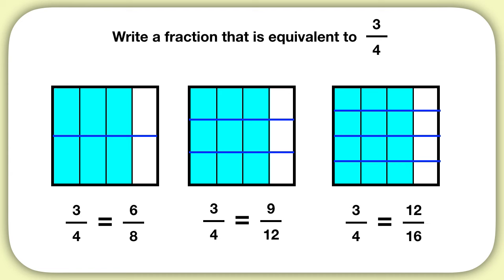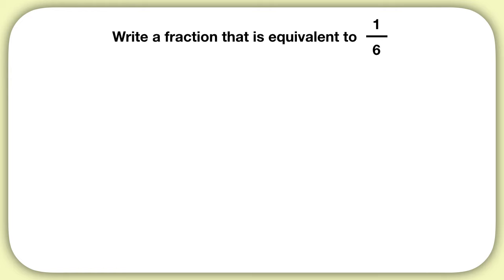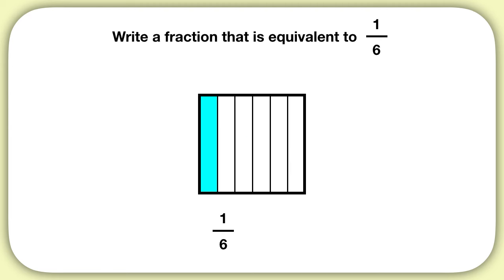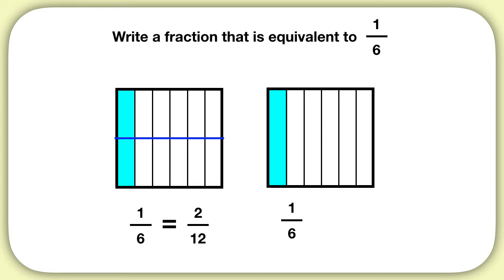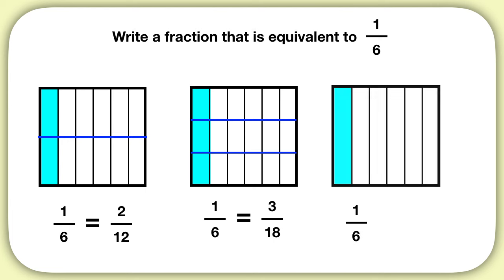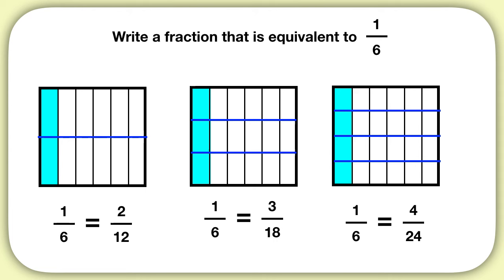Now are there other equivalent fractions besides these three that I could make? Yes — I could make more equivalent fractions by breaking my model into smaller equal sections. Now it's time for you to practice on your own. Write a fraction that is equivalent to one-sixth. I'll show you a few examples: if you drew a model of one-sixth and split it into two sections, you'd find the equivalent fraction two-twelfths. You could have split it into three sections, giving you three-eighteenths. Or you could have split it into four equal sections and found the equivalent fraction four-twenty-fourths. You could also choose to break it into more equal sections.